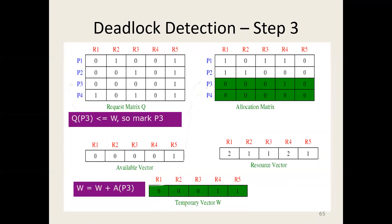So we mark P3 and add the allocation matrix into the temporary vector W. Now W becomes 0, 0, 0, 1, 1. Then we check again whether we can satisfy the remaining requests in the Q matrix using the updated W.